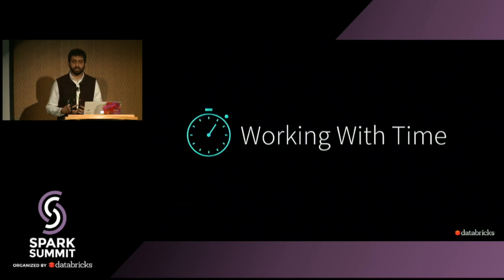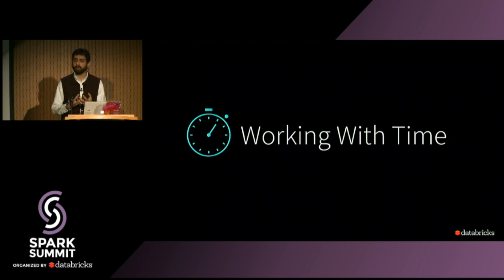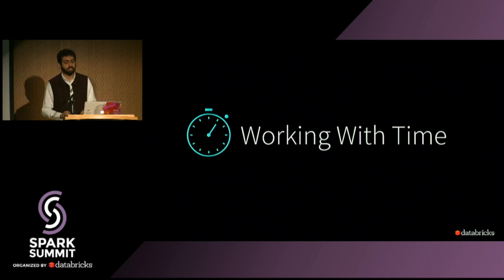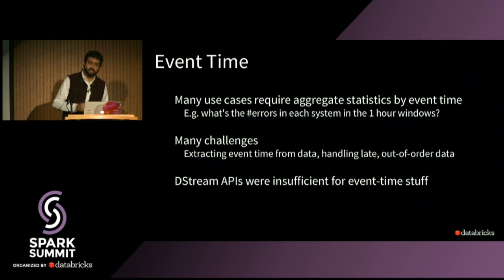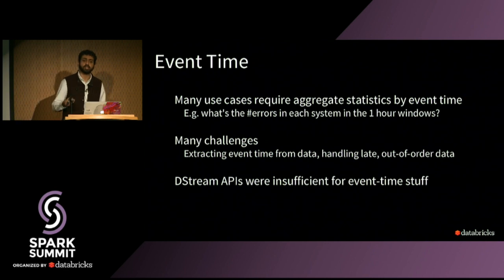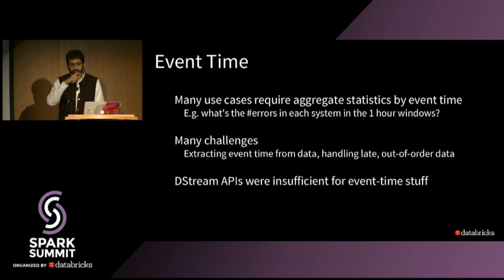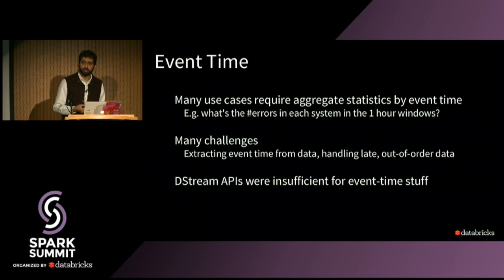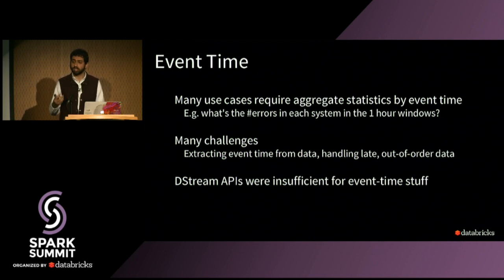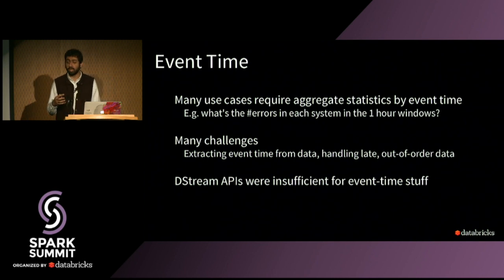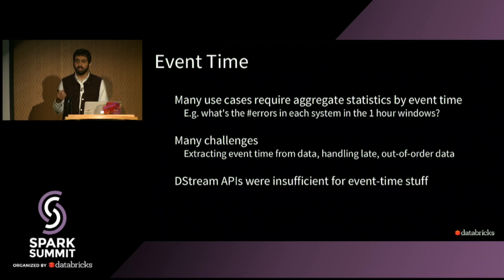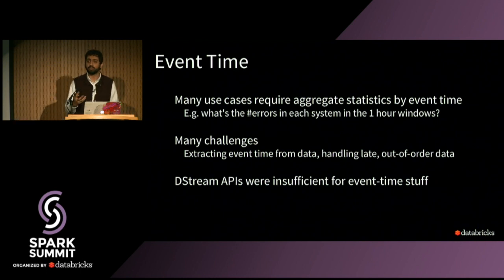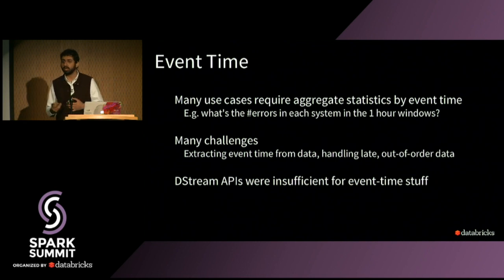The next step is working with event time — processing data while being aware of the time embedded in the data itself. This is one of the biggest challenges the earlier Spark Streaming DStream APIs did not address well because the APIs were not designed to expose event time data in the right way. We learned from those mistakes and designed the APIs in Structured Streaming so that event time processing becomes very natural. Some of the challenges to consider: data can be late and out of order. How do you reason about how late data to consider, and what happens when there is late data?